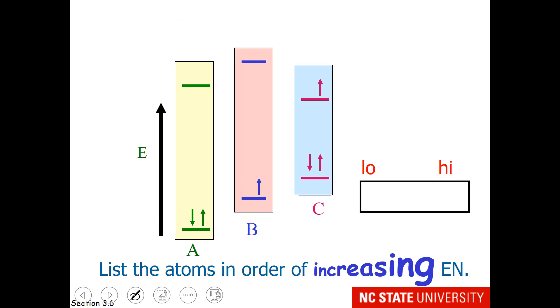This question asks us to list the atoms in order of increasing electronegativity. So electronegativity is equal to the attraction for an electron. So that means the electron has to come into a vacancy.